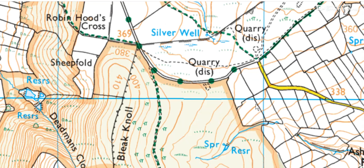We can see this pattern all the way along - that one stops and every other one stops. So south of this blue grid line the contours are measured in 5 meter intervals, and north of it in 10 meter intervals.